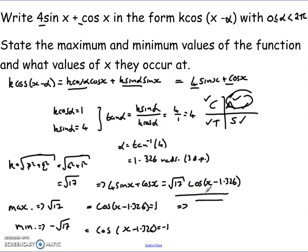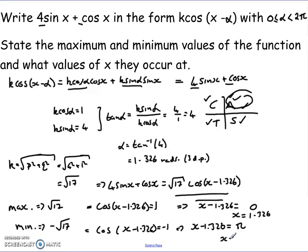For the maximum, we need cos(x − 1.326) = 1, and for the minimum, cos(x − 1.326) = −1. For the maximum, x − 1.326 = 0, since cosine's maximum of 1 originally occurs at 0. For the minimum, x − 1.326 = π, since that's where cosine's minimum occurs. So the maximum value occurs at x = 1.326 radians, and the minimum occurs at x = π + 1.326 = 4.468 radians to three decimal places.